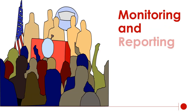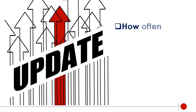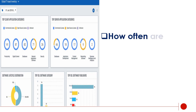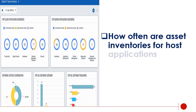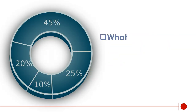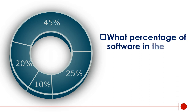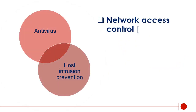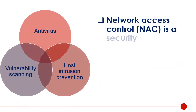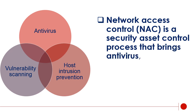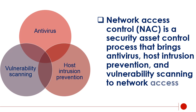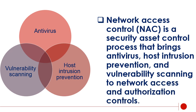Monitoring and reporting. How often are hosts checked for missing updates? How often are asset inventories for host applications updated? What percentage of software in the environment is not on the approved product list (APL)? Network Access Control (NAC) is a security asset control process that brings antivirus, host intrusion prevention, and vulnerability scanning to network access and authorization.